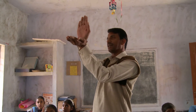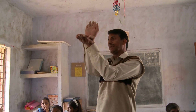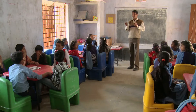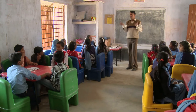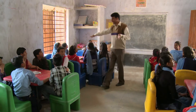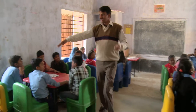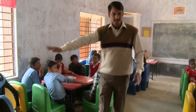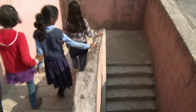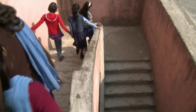In this upper primary maths class, a teacher uses resources imaginatively to supplement the textbook. After reviewing his students' knowledge of angles, he divides them into groups and asks them to find examples of naturally occurring angles outside their classroom.